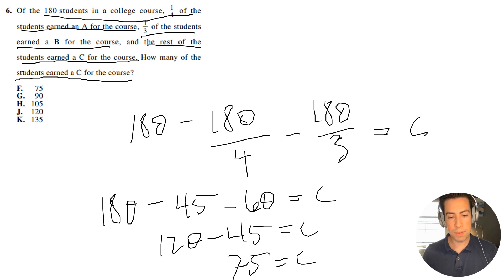So there are 75 students that got a C in the class. That's going to be answer choice F. If you have any questions, feel free to comment below, and I'll see you in the next video.